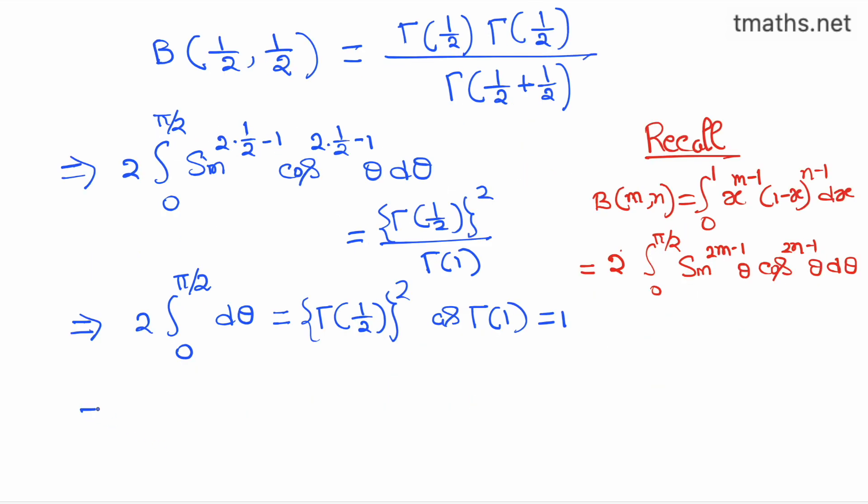Now, computing the left hand side, we have theta, where theta varies from 0 to π/2, is equal to gamma half whole square.